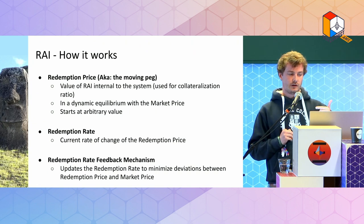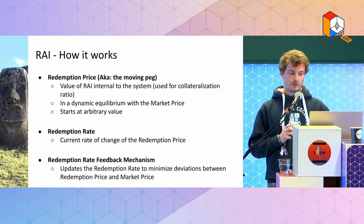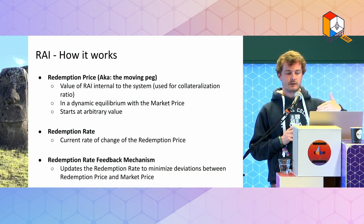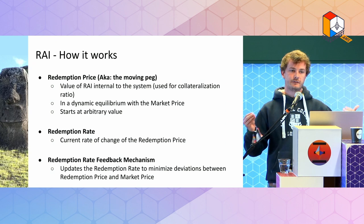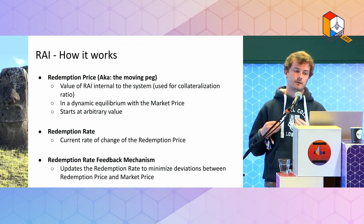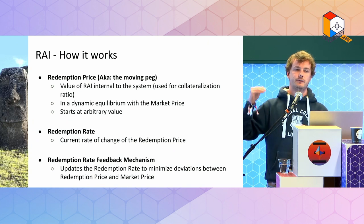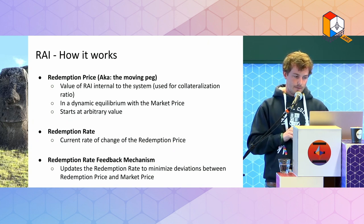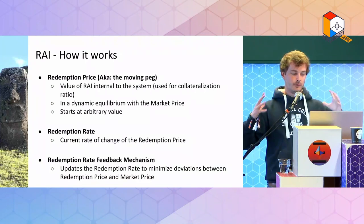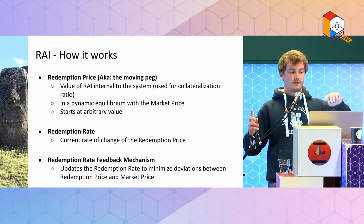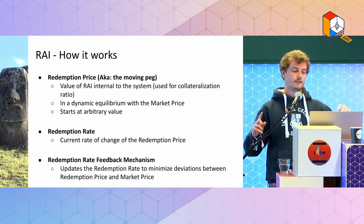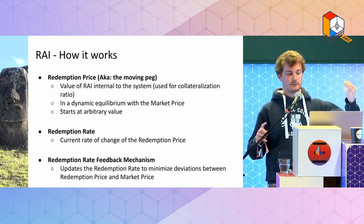Second, the redemption rate is the rate of change of the redemption price — the direction and magnitude at which the peg is moving — expressed as an interest rate. For example, 10% a year would mean the target price going up 10% a year. Third, the redemption rate feedback mechanism is the whole system that sets the rate using the PID controller.